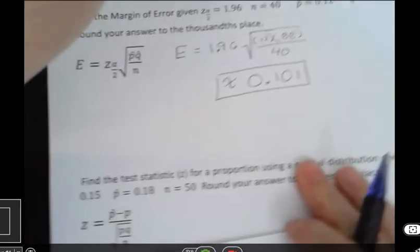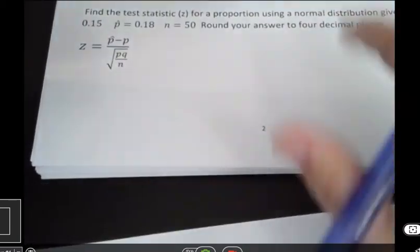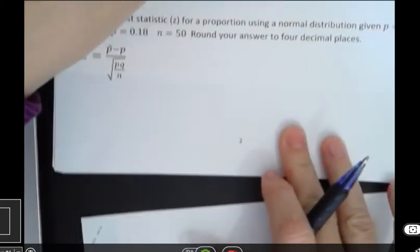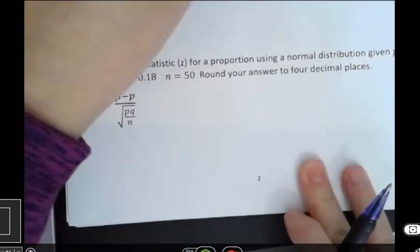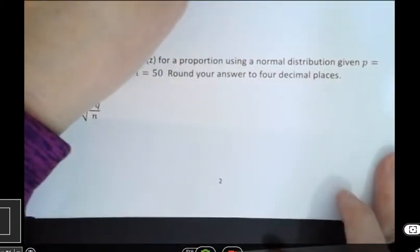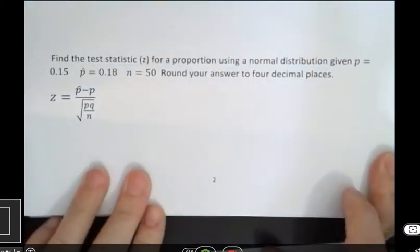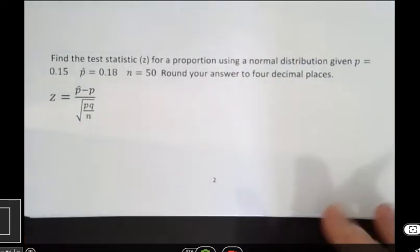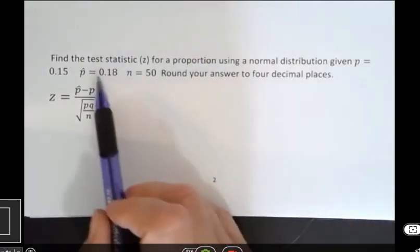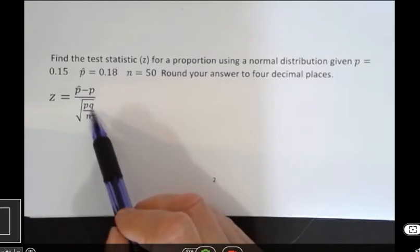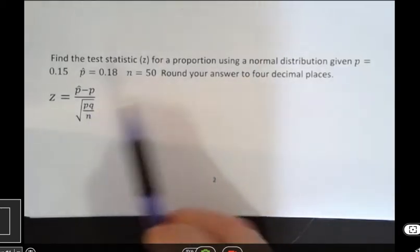And the other one I want to do for you is the test statistic for a proportion. And I have given you, I think, everything you need for this one. But again, if you're not sure about what you're doing here, then you want to go to your stats formula sheet and see what everything actually stands for. But we're given P hat, we're given P. If we're given P, we know what Q is because Q is just 1 minus P. And we know N. I think we're good to go.